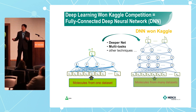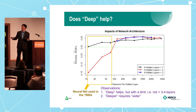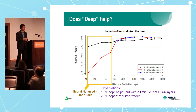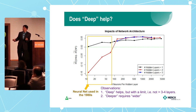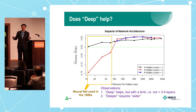The key points here are: getting deeper with multiple layers, and using multi-task learning. We addressed this in our two papers. Here is one plot from our first publication. The X-axis is the number of nodes at each layer — assuming each layer has the same number of nodes. The Y-axis is performance — how good the network performs compared to random forest, where zero means the same as random forest. The black line represents one layer, which is the traditional shallow neural net.